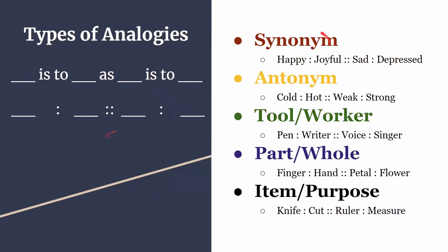The first type is synonym. Happy is to joyful as sad is to depressed. With synonyms we see that happy and joyful are the same, and sad and depressed are the same - they're synonyms.